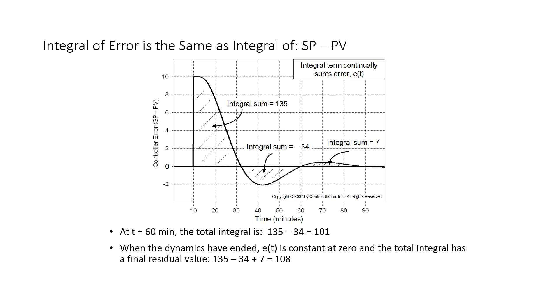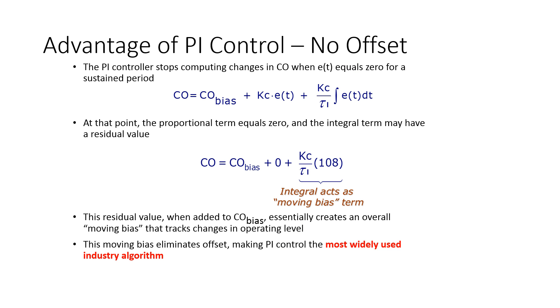Here we had the 108 as well. This is like a moving bias. It is going to correct for that persistent offset.